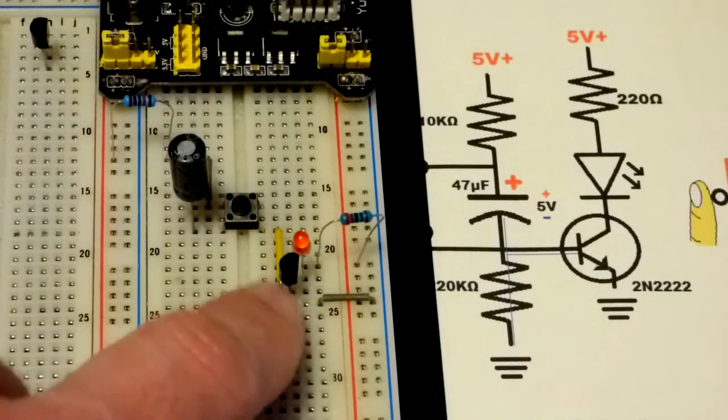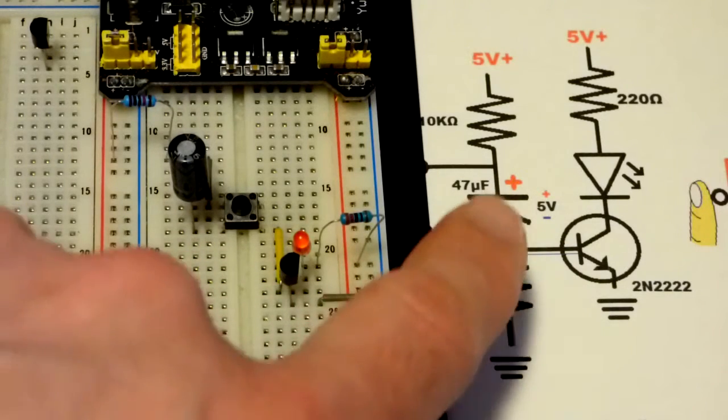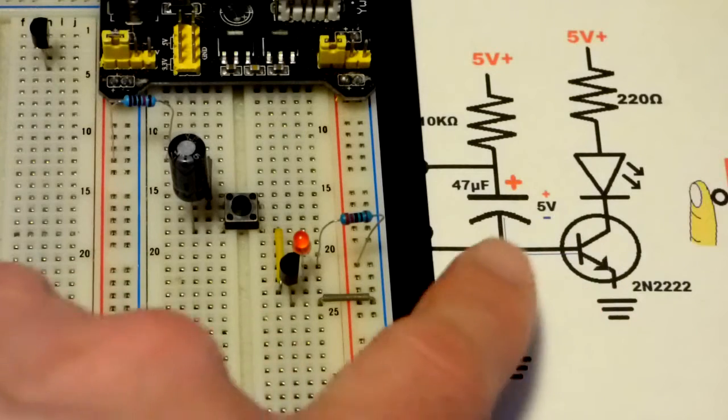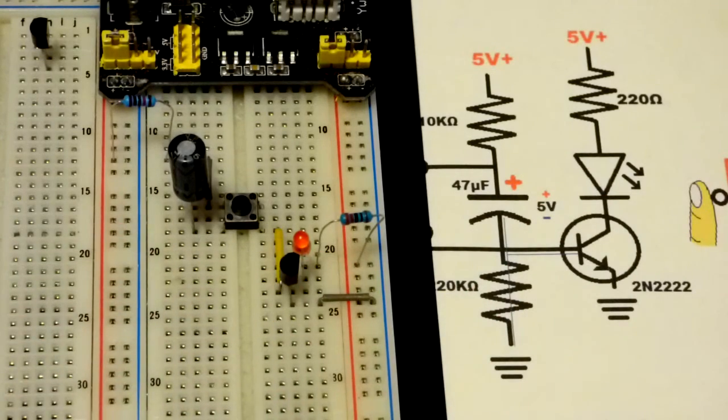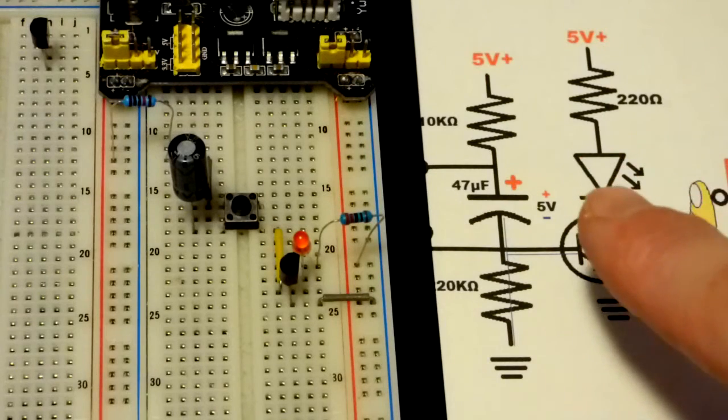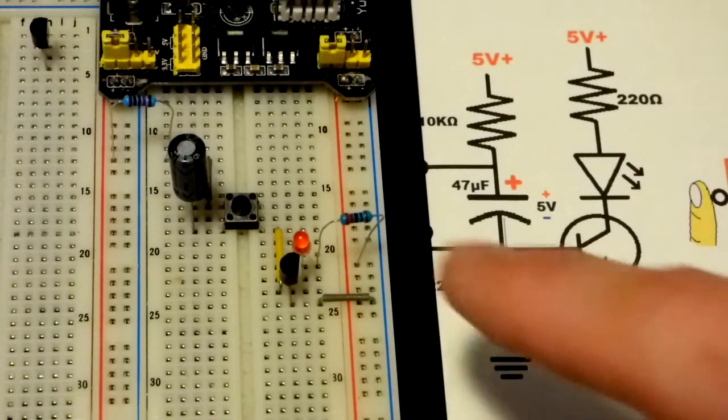And that's because current can still get through the capacitor. Once it fully charges, there's a little bit of leakage. And normally that's no big deal. But of course it's going to a transistor and amplifier.